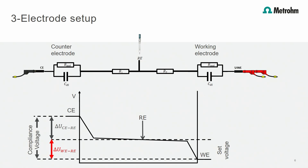If each electrode and its reaction needs to be measured separately, a three electrode setup is used. In the three electrode setup an additional electrode — the reference electrode — is used in the cell. Now it is possible to determine the potentials of the working and counter electrode with respect to the reference electrode individually. Therefore it is possible to determine the polarization resistance and reaction kinetics of each electrode separately, which is quite important for electrolysis applications. If a certain set potential needs to be applied at the working electrode, the compliance voltage between working and counter electrode is adjusted until the set potential is reached.